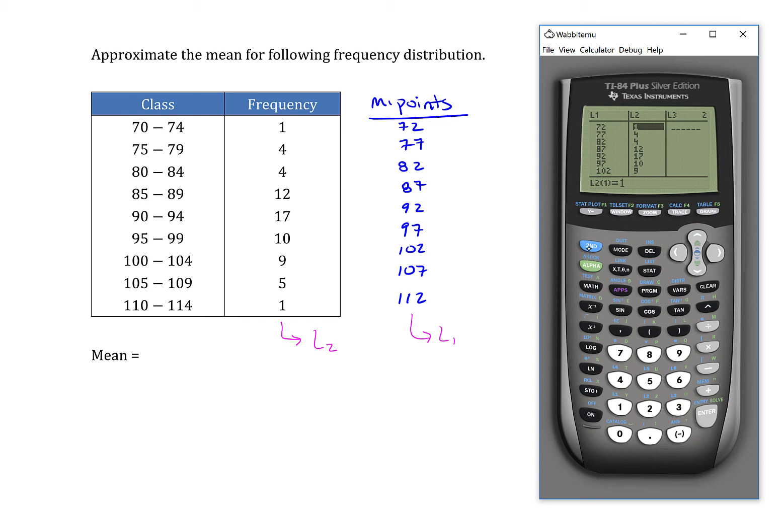Once those are all in, if you leave the list editor, you can then press stat, slide over to calc. The very first option is one varistats.